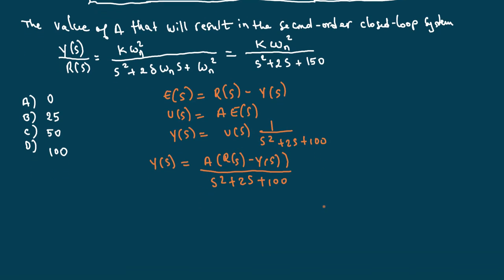Simplifying this, I have A*R(S) - A*Y(S) over the same denominator, S² + 2S + 100. Then it's simple math from here, so you have Y(S) times S² + 2S + 100 equals A*R(S). Remember, we want Y(S) over R(S), minus A*Y(S).